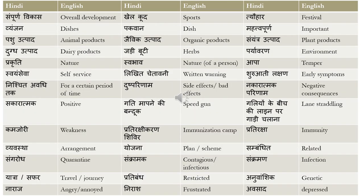'Sampoorna vikas' means overall development — 'sampoorna' is overall and 'vikas' is development, which can also mean growth. 'Tyohar' means festival. 'Vianjan' means dishes or cuisine — for example, 'mujhe Italian vianjan pasand hai' means I like Italian cuisine. 'Pakwan' means dish. 'Mahatvapurna' means important.